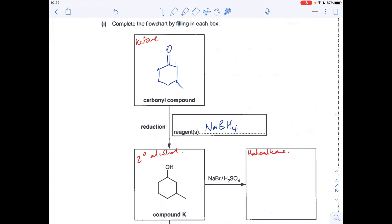So moving along this way now, we've got a mixture of sodium bromide and sulphuric acid. So that's going to create haloalkane from this secondary alcohol. So basically, we just need to substitute the OH group for the Br.